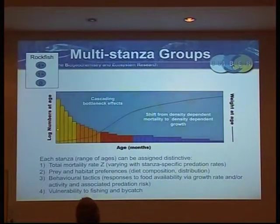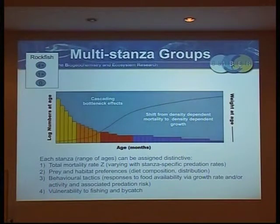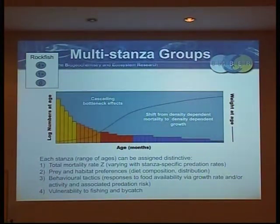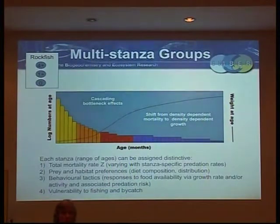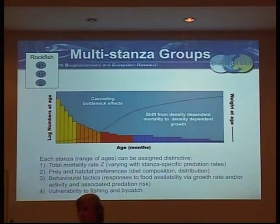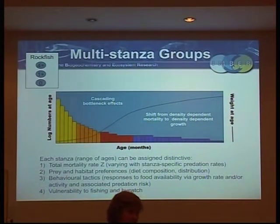So this is how multi-stanza works. There don't have to be even numbers of ages - there can be quite a large number of ages in the adult group versus the youngest group. Basically what you're trying to do is look at where there's a bottleneck: total mortality rates, shifts in prey or habitat through time, different ways they use the system, or different vulnerabilities to fishing. Particularly if there's tension between fleets - for example, a shrimp fleet in the Gulf catching baby snapper that can grow up to be the target of a different fishery.